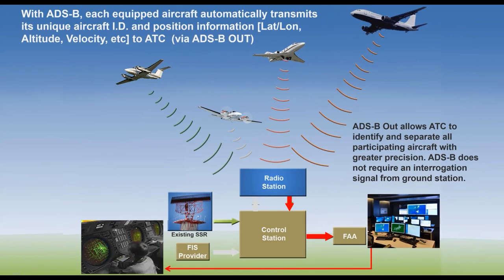With ADS-B, each aircraft automatically transmits its own unique aircraft ID or address — in the U.S. that's typically the tail number; in other countries it's an assigned hex address. Position information such as lat/long, altitude, and velocity is being broadcast. It comes down to the ground station as you're flying by, and that allows ATC to identify and separate all participating aircraft with greater precision because they have lat/long and intent information.